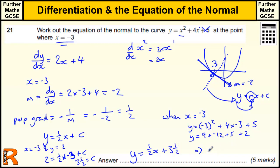Or, more prettily, this is going to be equal to, we double everything, we get 2y equals x plus 7.